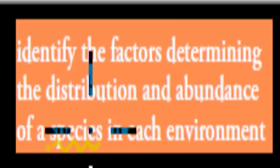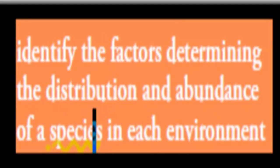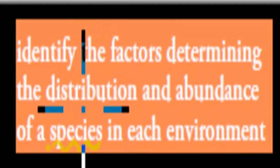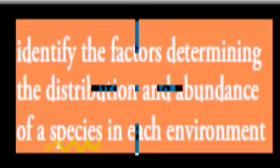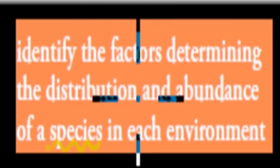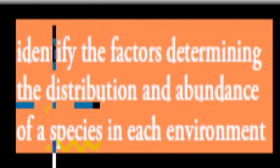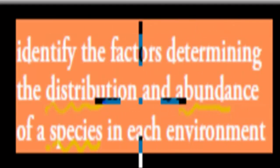This word 'species' is important. We'll go over that word before we start. And what we have to do in this dot point is identify what kind of factors affect distribution and abundance. So we'll also have to talk about distribution and abundance and what exactly those are.